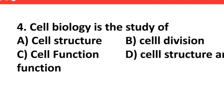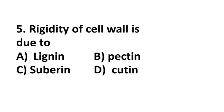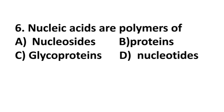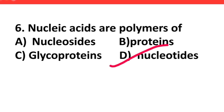Fifth: rigidity of cell wall is due to A) lignin, B) pectin, C) suberin, D) cutin. The answer is lignin. Sixth question: nucleic acids are polymers of A) nucleoside, B) proteins, C) glycoproteins, D) nucleotides. The answer is nucleotides.